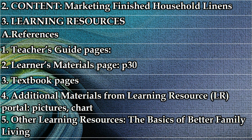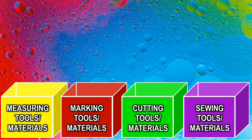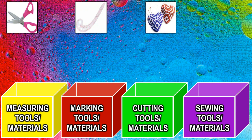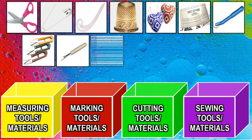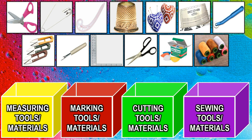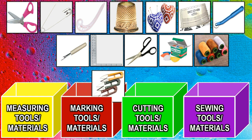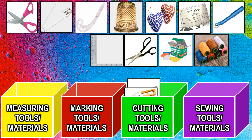For the review, group the pictures of tools and materials in sewing according to their classification and place them in their correct box. We have pictures of sewing materials and boxes below. Starting with the thread clipper — it's a cutting tool. Next is the stitch clipper, which should be placed in the cutting tools and materials box.